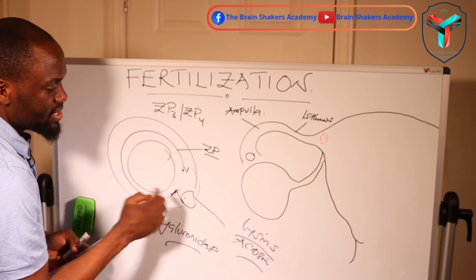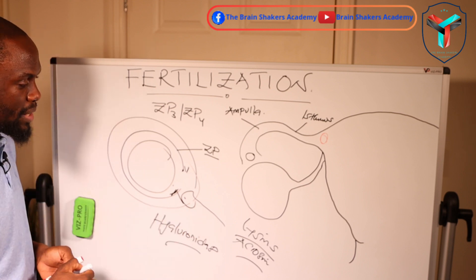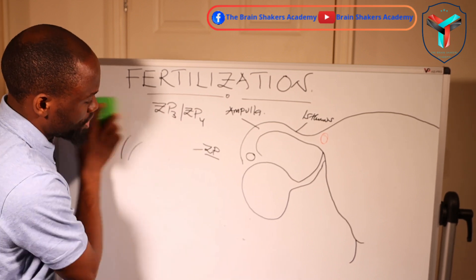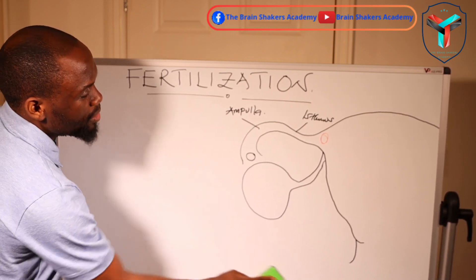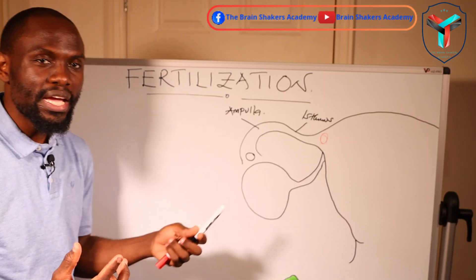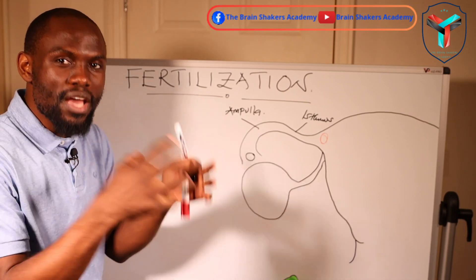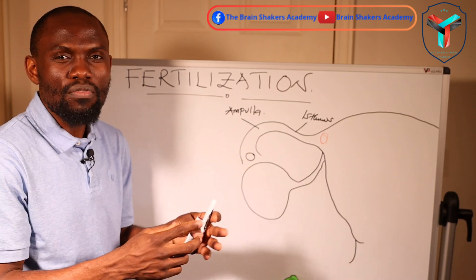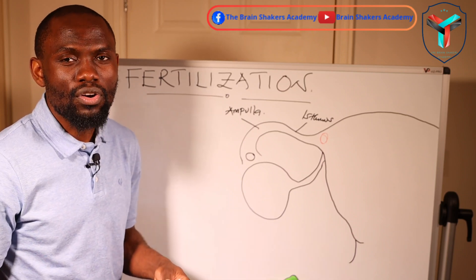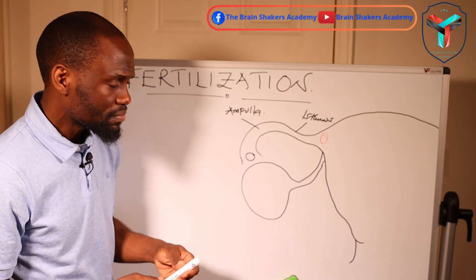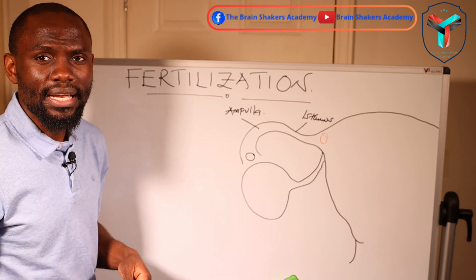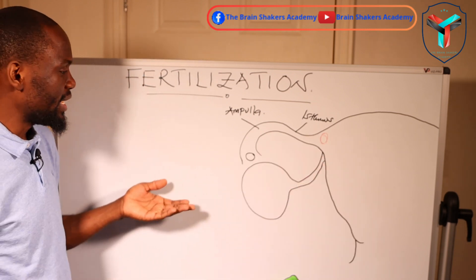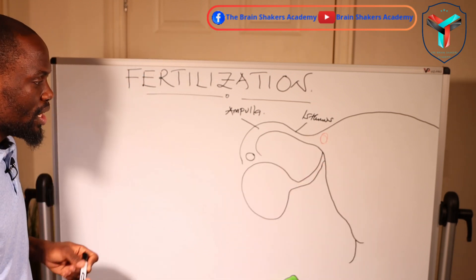Once the zona pellucida is digested and entry of the spermatozoa is allowed, what follows is called the cortical reaction. This reaction prevents polyspermy — that is, one ovum being fertilized by multiple spermatozoa. If two spermatozoa fertilize one ovum, you would have a triploid number of chromosomes, which is not favorable for human life, and that fertilized ovum may die and be eliminated through apoptosis.